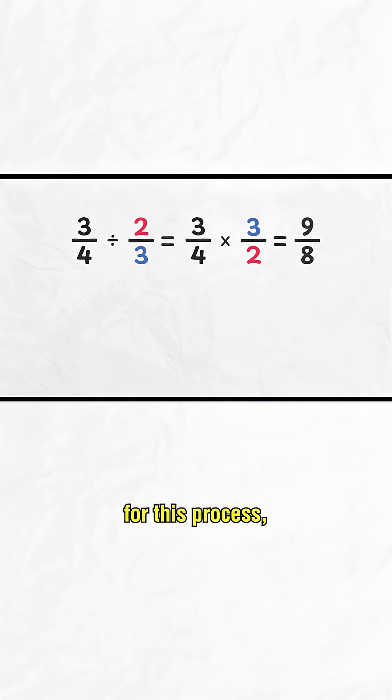They created a shortcut for this process, which is why when we divide a fraction by another fraction, we multiply by its reciprocal. This invert and multiply rule is not arbitrary. It's a shortcut that reflects a deeper, logical process.